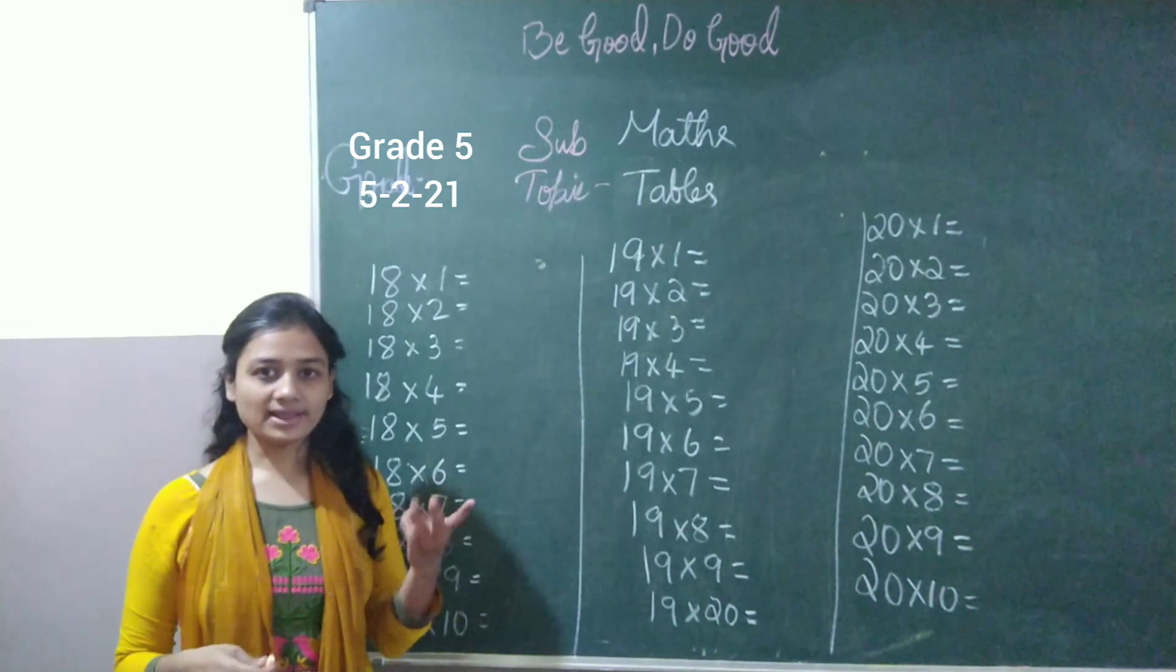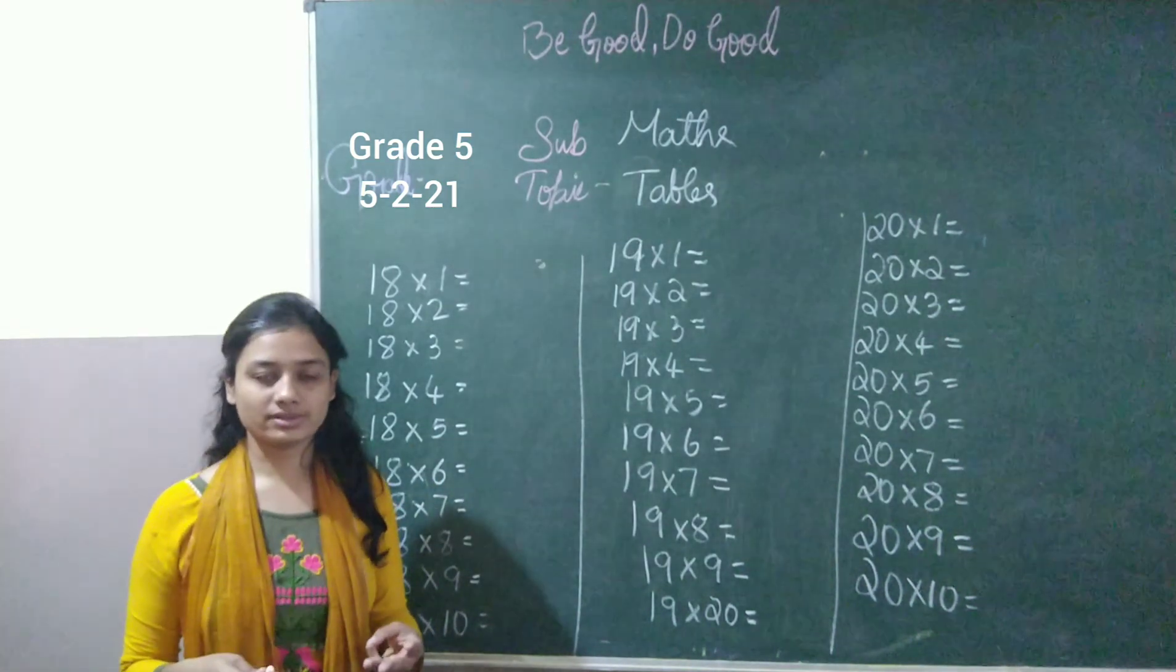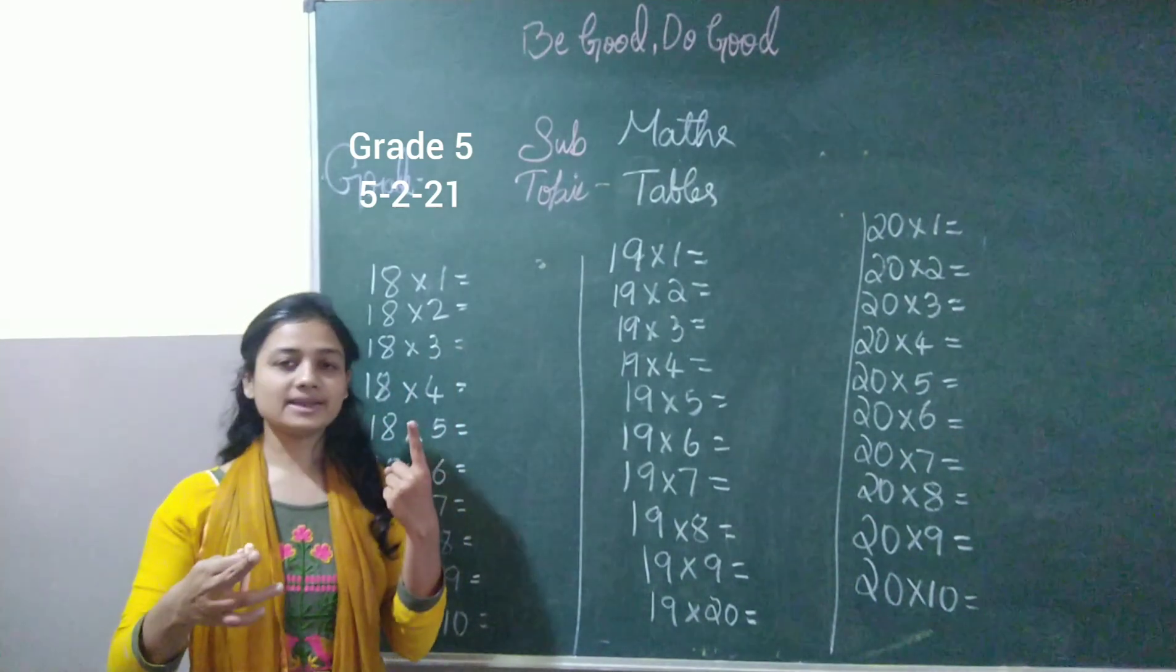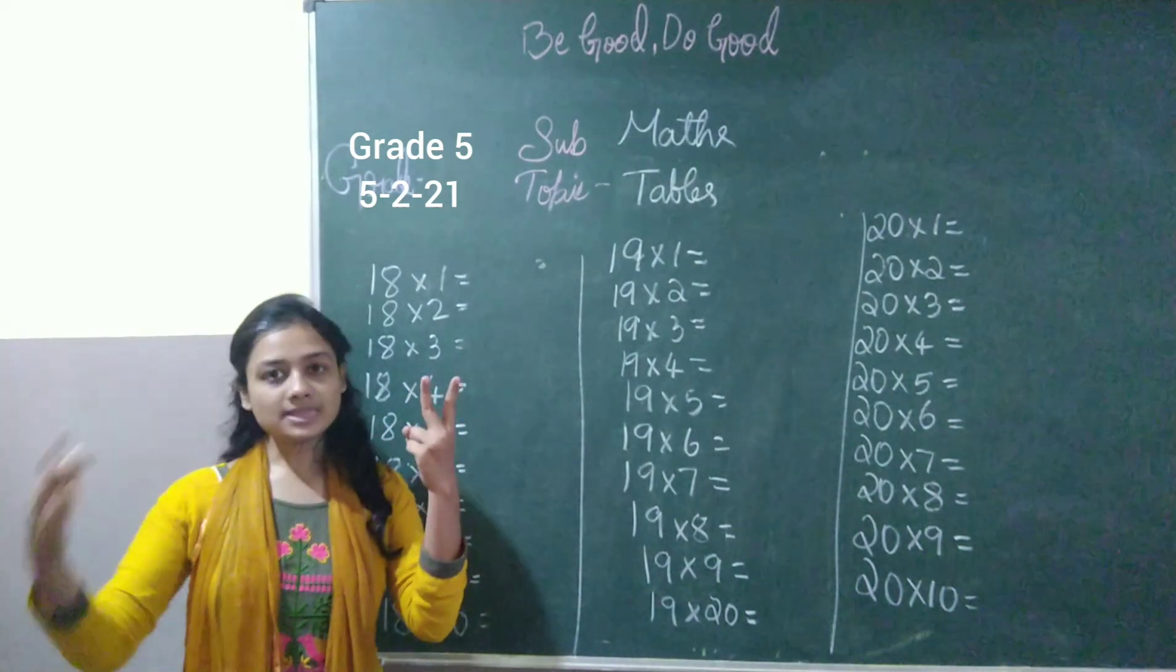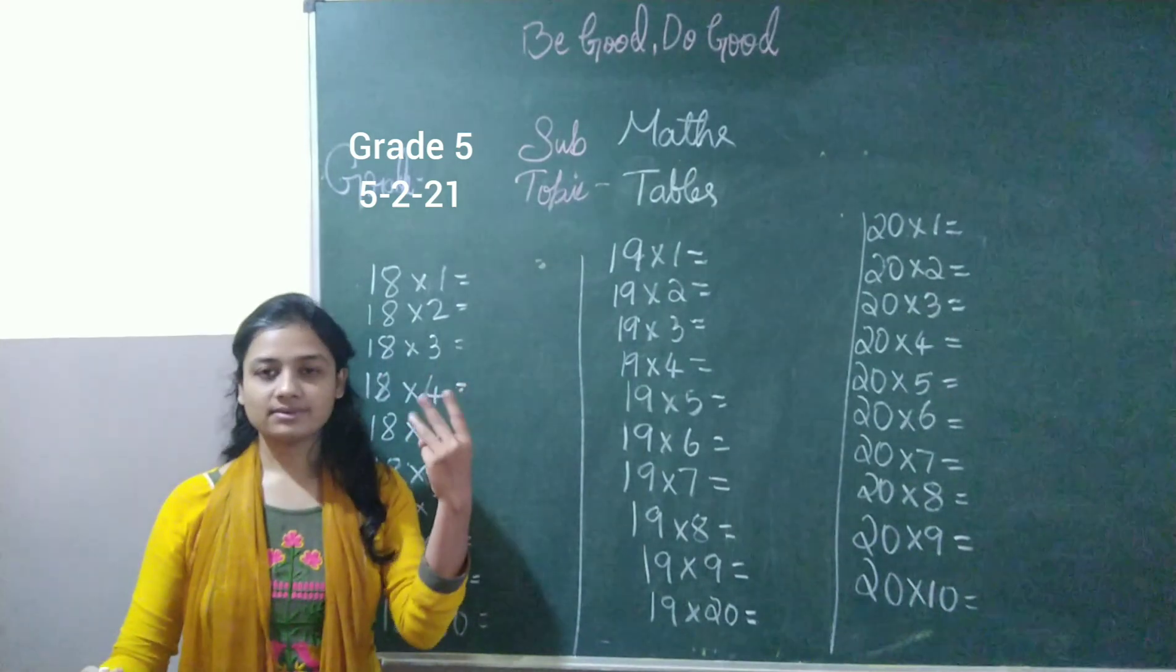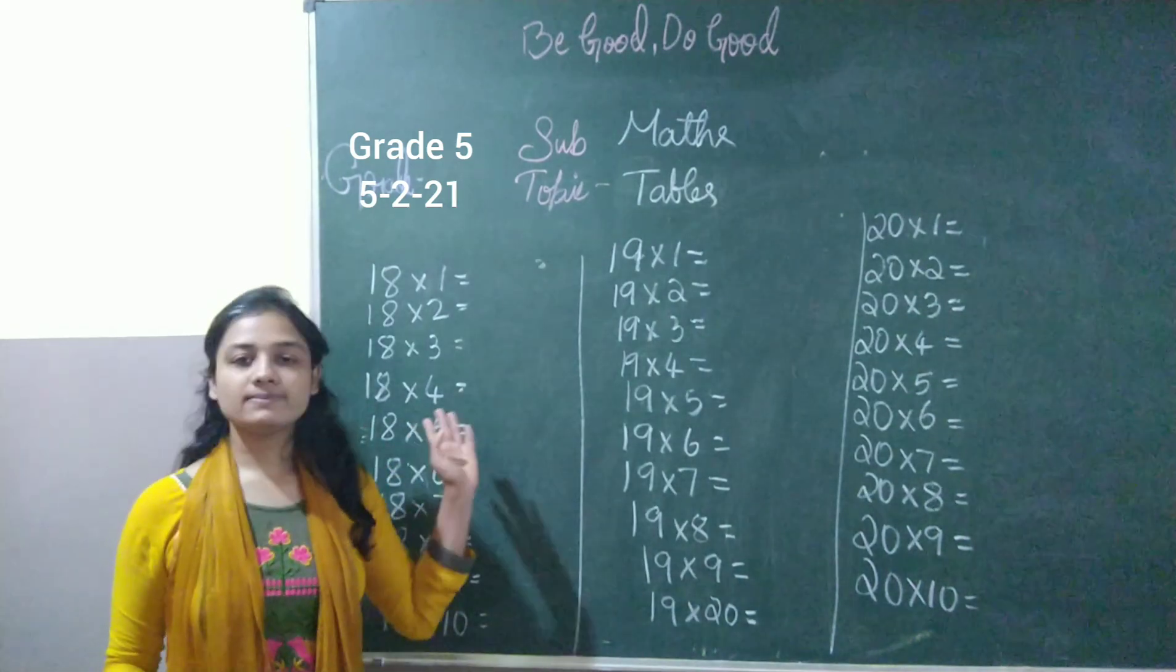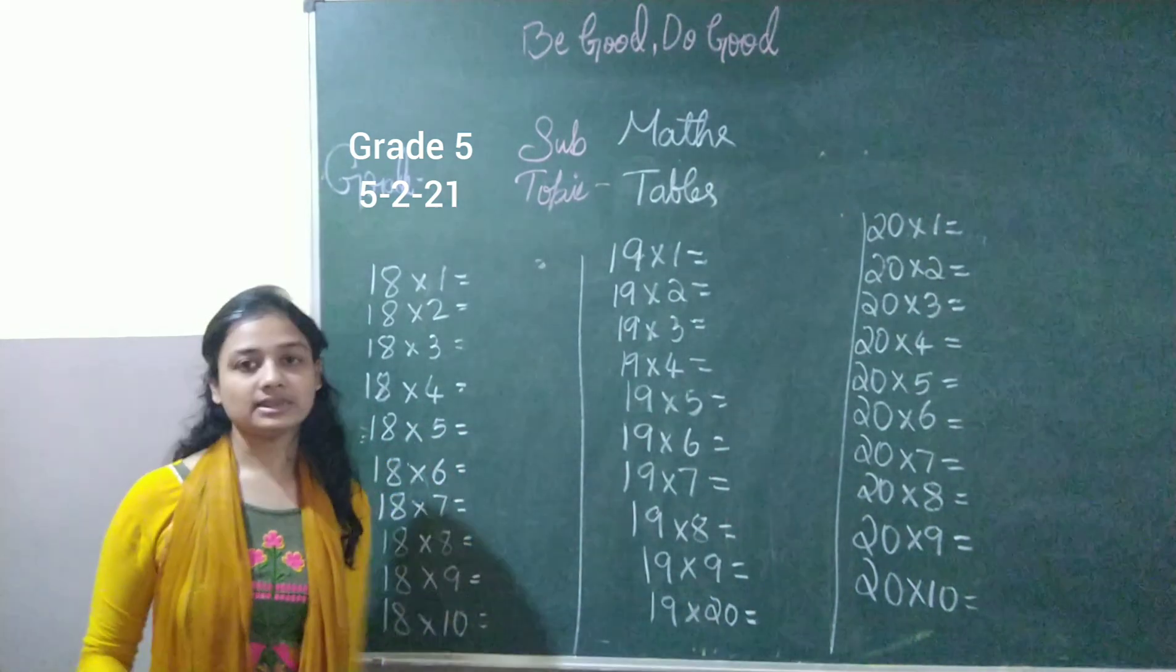So skip counting of 2 means how will you start? So let us start from 1 and do skip counting of 2. That is 1, I will skip the next number and I will say 3. I will skip the next number 4 and I will say 5. I will skip the 6 and I will say 7. So this is skip counting that we will be using in 18 and 19 here.